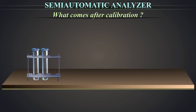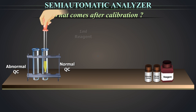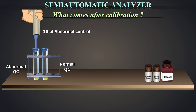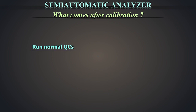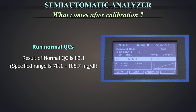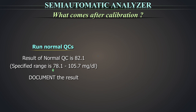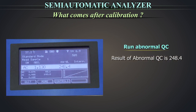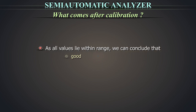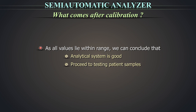Prepare the control tubes. Take two test tubes labelled as normal and abnormal QC. Add 1 ml of reagent to both, and 10 µl of normal control and 10 µl of abnormal control to the respective tubes. Run the QCs. The result of the normal QC is 82.1, which is within the specified range of 78.1 to 105.7 mg per deciliter. Document the result. Similarly, run the abnormal QC. The result of the abnormal QC is 248.4, which is within the specified range of 210 to 318 mg per deciliter. Document the result. As all values lie within the range, we can conclude that the analytical system is good and proceed to testing patient samples.